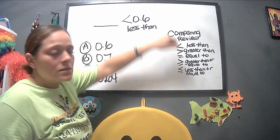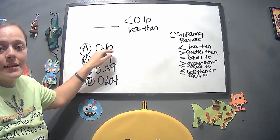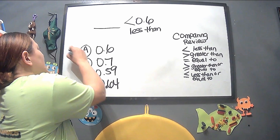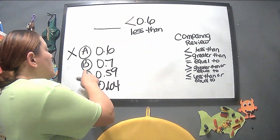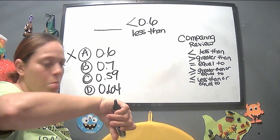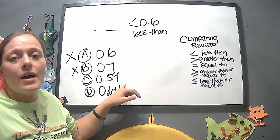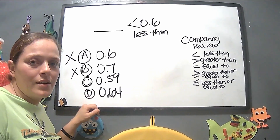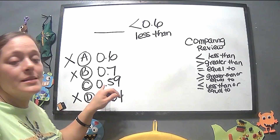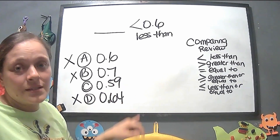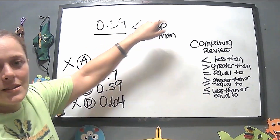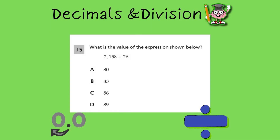We already know the symbol is less than — no line underneath, so it's not equal to. The decimal on the right is 0.6. Answer choice A is 0.6 — that wouldn't work because it's not equal to 0.6. Choice B is 0.7 — seven is bigger than six, so no. Choice C is 0.59 — that's getting closer. Choice D is 0.64 — that goes up. So 0.59 (fifty-nine hundredths) is less than 0.6, making C our answer.